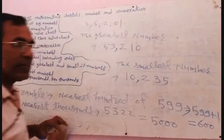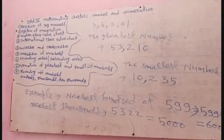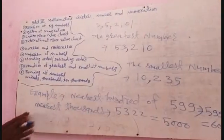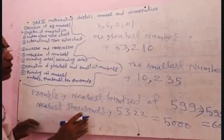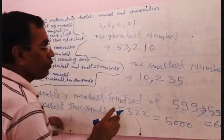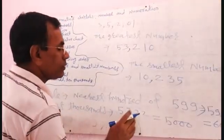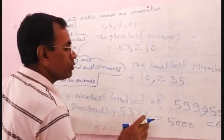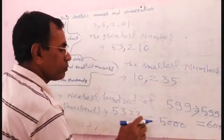So you do not add anything, and the nearest thousand of 5322 is 5000.